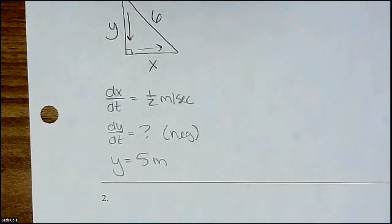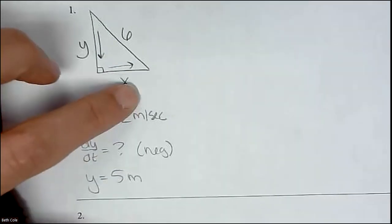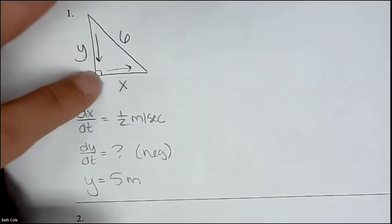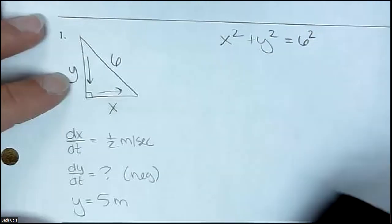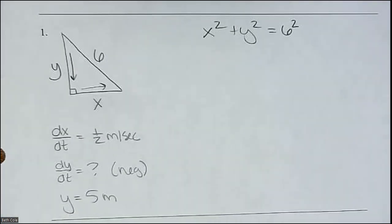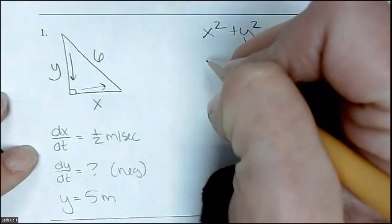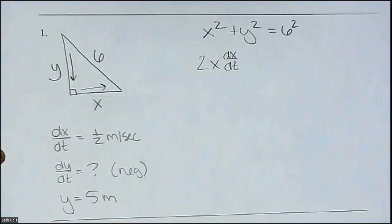So we got everything from the problem. We drew a picture, we made our list of everything they gave us. Now we need to write an equation — a relationship between these variables. Since it's a right triangle, we use the Pythagorean theorem: X squared plus Y squared equals six squared, or 36. Now we're going to take the derivative. Every single variable gets a chain rule because they are all with respect to time. The derivative of X squared is 2X dx/dt, plus the derivative of Y squared is 2Y dy/dt, equals zero — because that constant goes to zero.